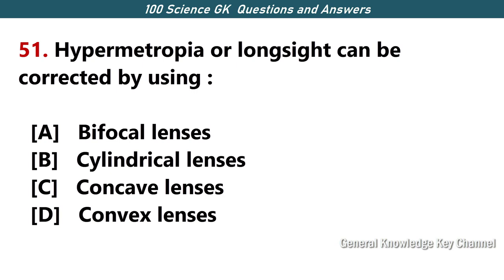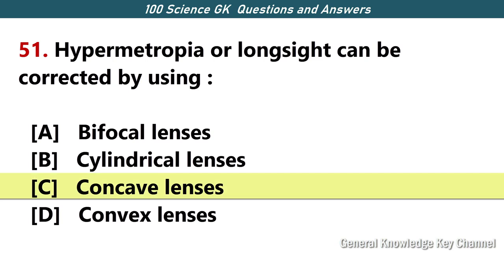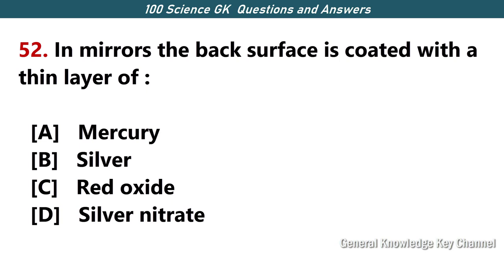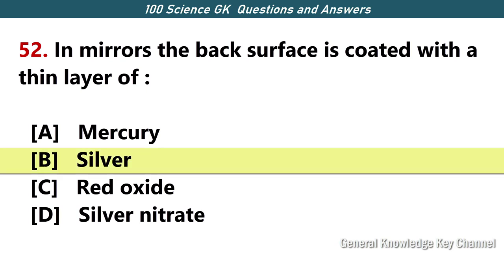Hypermetropia or long-sightedness can be corrected by using — Answer D — convex lenses. In a mirror, the back surface is coated with a thin layer of — Answer B — silver.